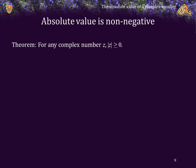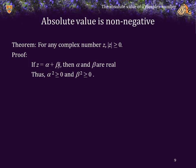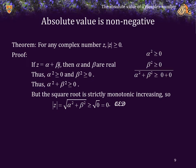Getting back to our theorem: if z is equal to alpha plus beta j, then alpha and beta must be real. Thus, alpha squared is greater than or equal to 0, and beta squared is greater than or equal to 0. Adding both sides of these two inequalities, alpha squared plus beta squared is greater than or equal to 0. However, the square root function is strictly monotonically increasing, so the absolute value of z, which is the square root of the left-hand side, is greater than or equal to the square root of the right-hand side, which is 0.